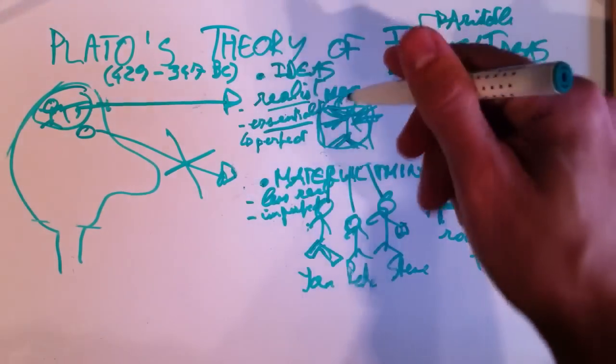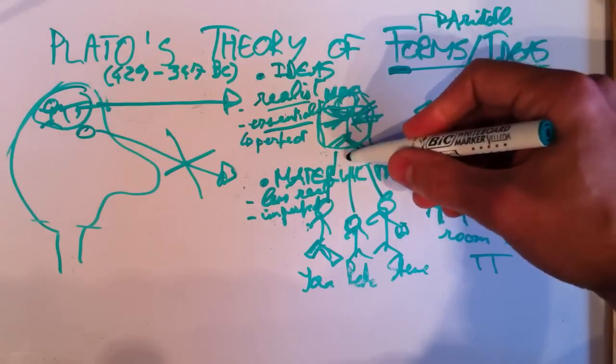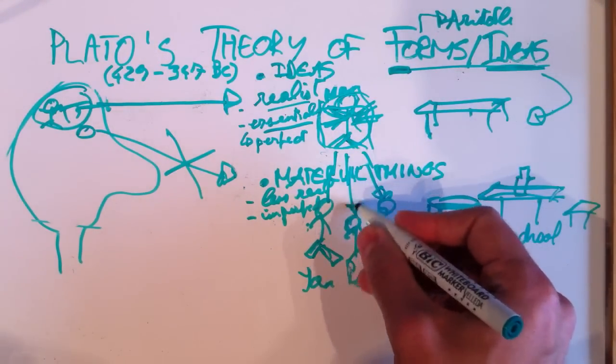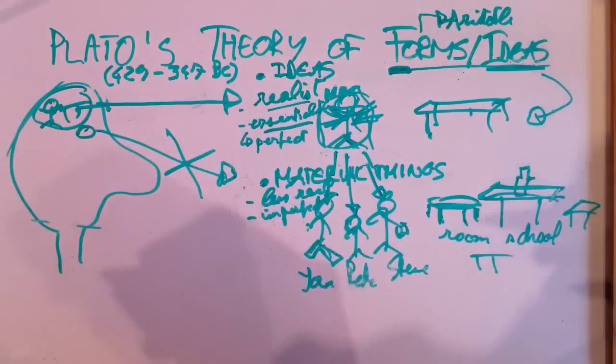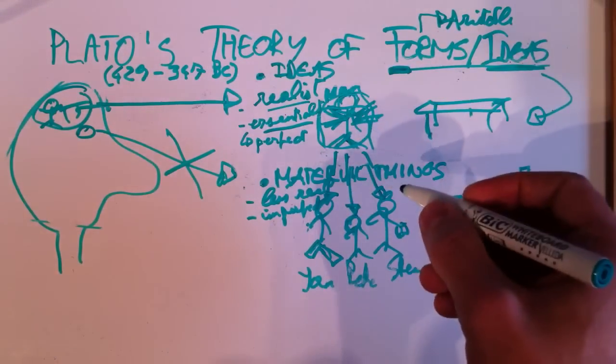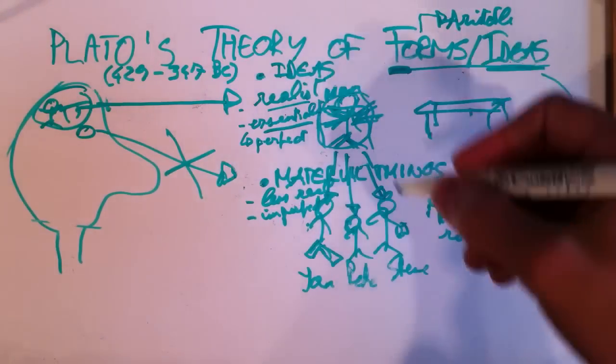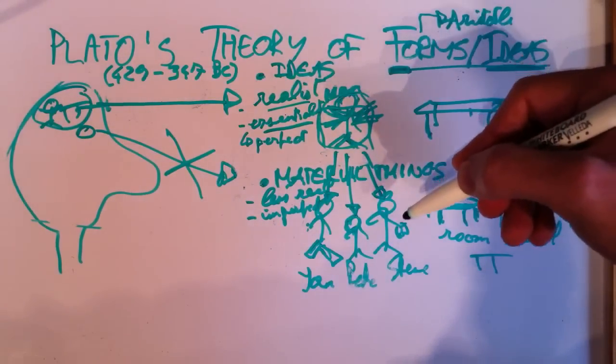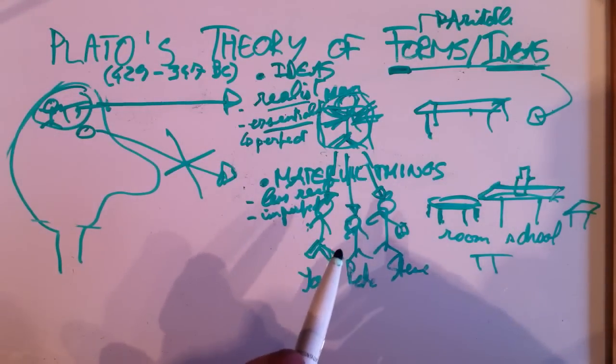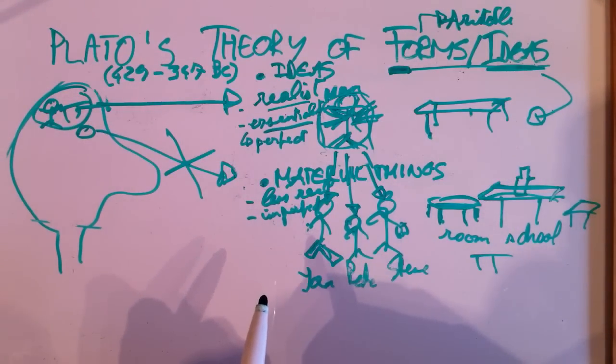it's really the other way around. So, man in general, it's what exists, and Pete, Steve, and Jan, they are copies of the idea. Copies or shadows, so the arrow goes down rather than up, in contrast with what you might intuitively think.